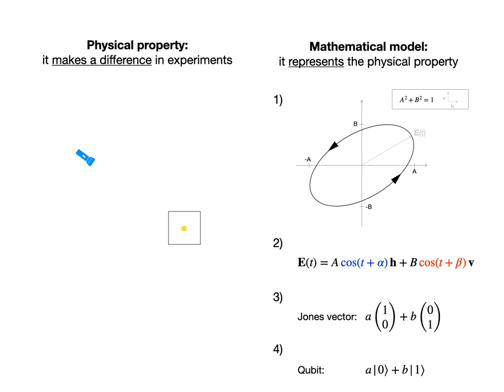So the polarization state of a single photon can be described mathematically as a qubit. And this isn't just a symbolic coincidence, because physically, photons do behave like qubits, that is, according to the strange rules of quantum mechanics.